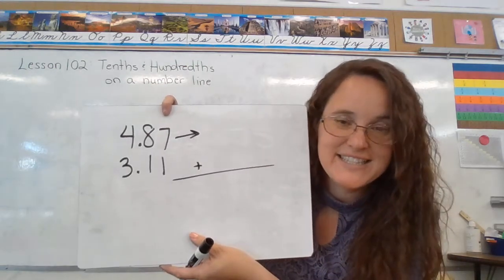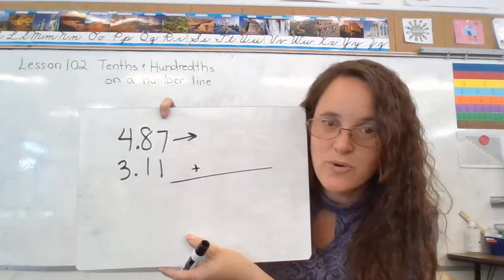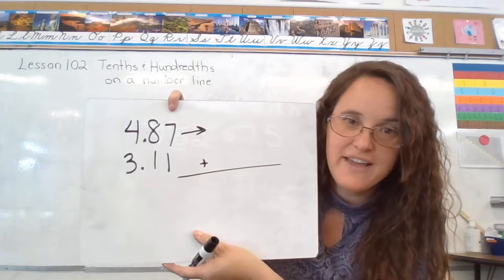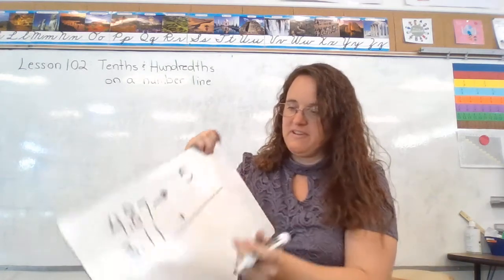So would 4 dollars and 87 cents be closer to 4 or closer to 5? Correct answer would be 5.